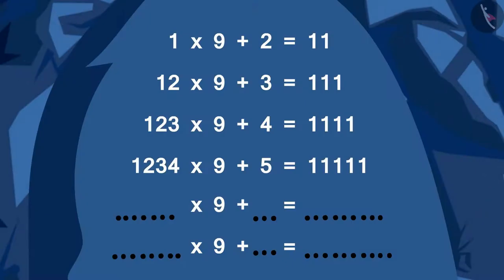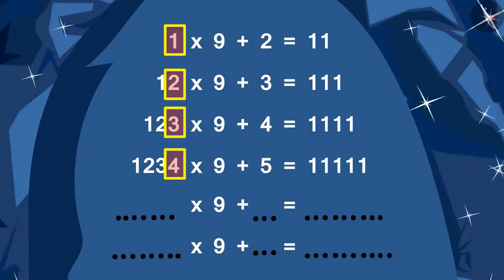See, Bablu. Every time a new digit is added to the number that is multiplied by 9. And it is one more than its previous digit.